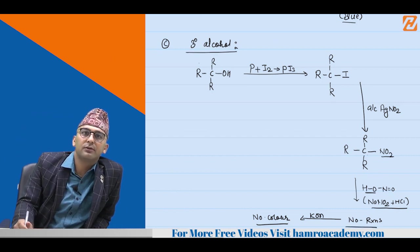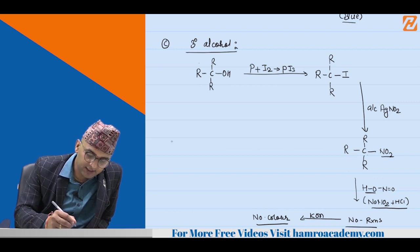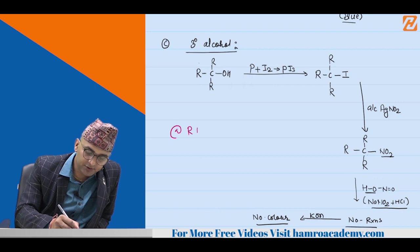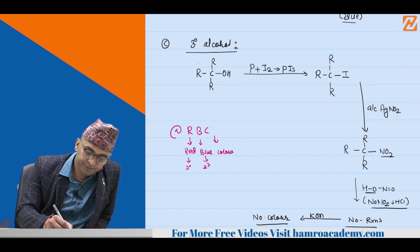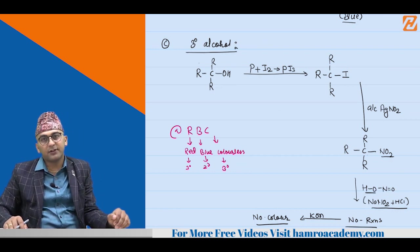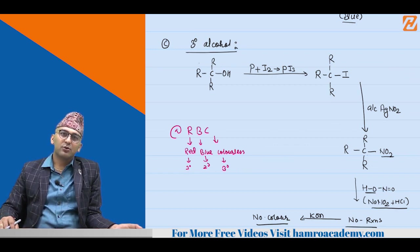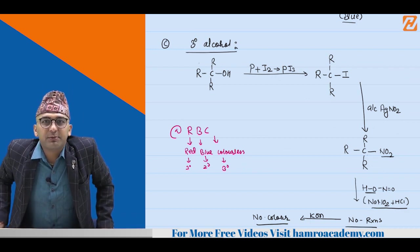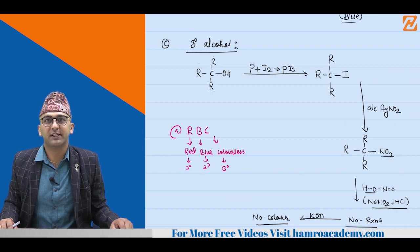So we can distinguish primary, secondary and tertiary alcohol simply by this Victor Meyer test. Primary gives red color (nitrolic acid), secondary gives blue color (pseudonitrol), and tertiary gives no color — different products allow us to clearly distinguish all three types of alcohol.